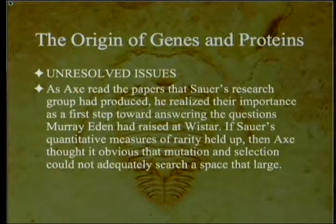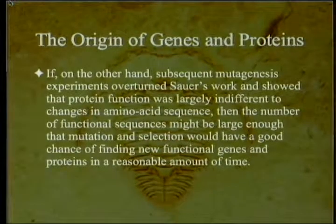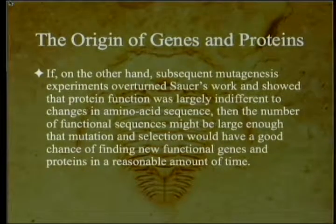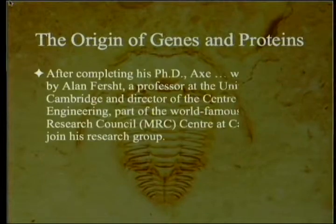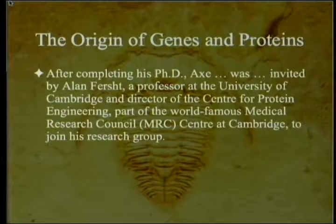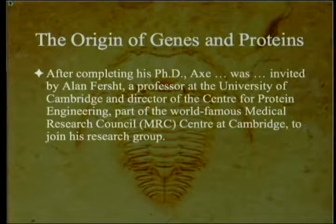As Axe read papers that Sauer's research group had produced, he realized their importance as a first step toward answering the questions Murray Eden had raised at Wistar. If Sauer's quantitative measures of rarity held up, it would be obvious that mutation and selection could not adequately search a space that large. If subsequent mutagenesis experiments overturned Sauer's work and showed protein function was largely indifferent to sequence changes, then mutation and selection might have a good chance of finding new functional genes in reasonable time. After completing his PhD, Axe was invited to join Alan First's research group at the Center for Protein Engineering at Cambridge.